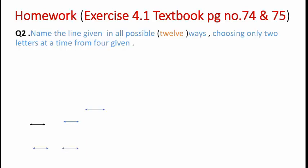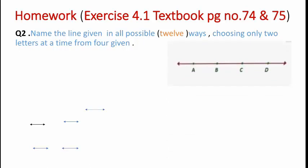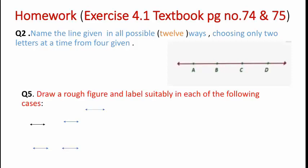Now for your homework from Exercise 4.1 given in textbook pages 74 and 75: Question number 2 — you have to name the line given in all possible 12 ways, choosing only two letters at a time from the four given letters. Refer to the figure present on the screen below question number 2.